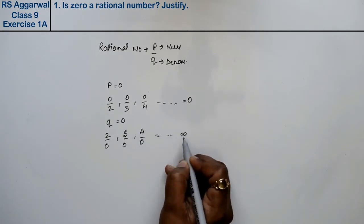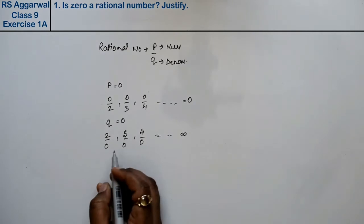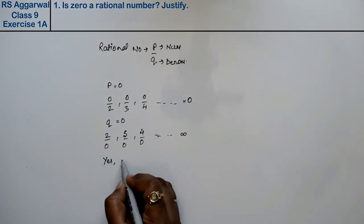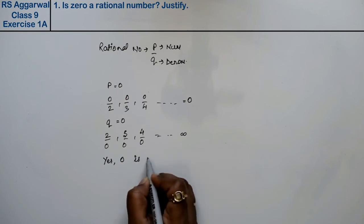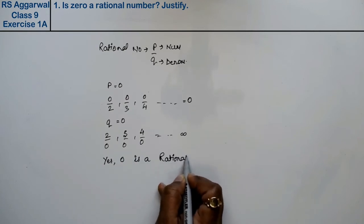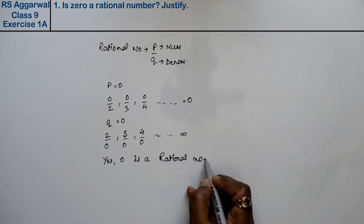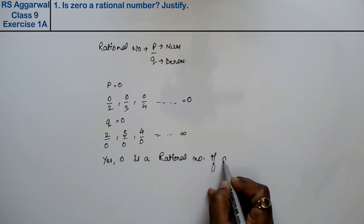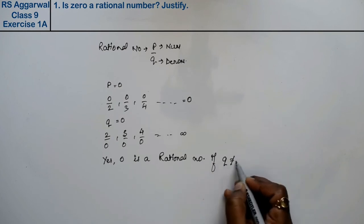Hence, in the end, yes, zero is a rational number, but only when q is not equal to zero.